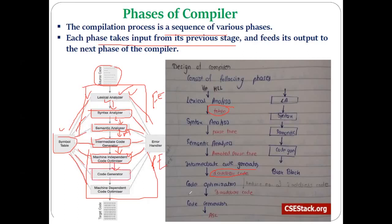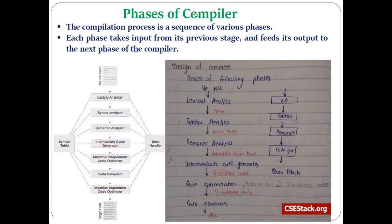After optimization, the code optimizer generates an optimized three-address code. The difference between the intermediate code before and after optimization is that the first is unoptimized while the second is optimized. Now we have reached the code generation phase. The last remaining phase is machine-dependent code optimization, which will also be discussed in this unit. Let's start with the last phase of the compiler — the code generation phase.